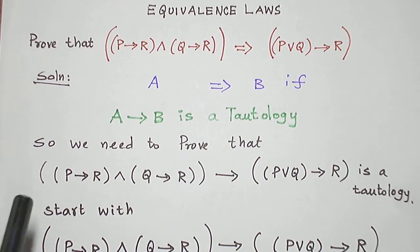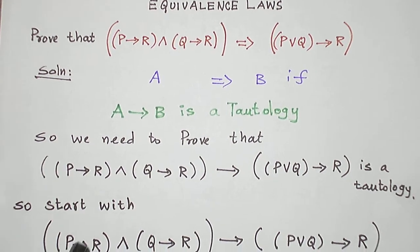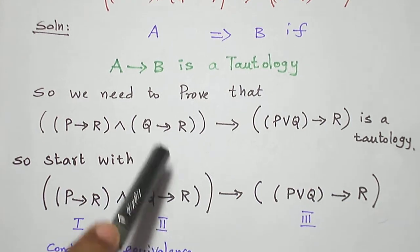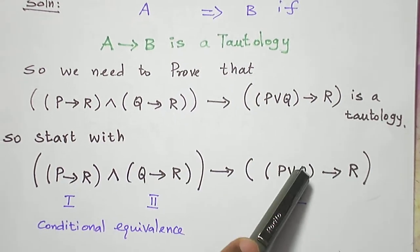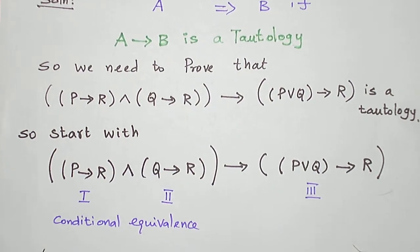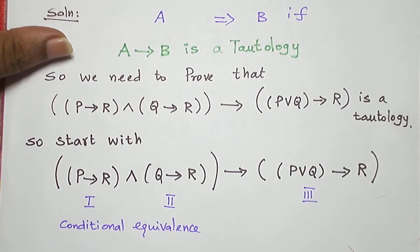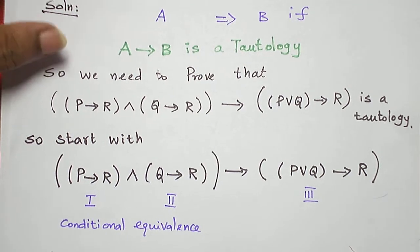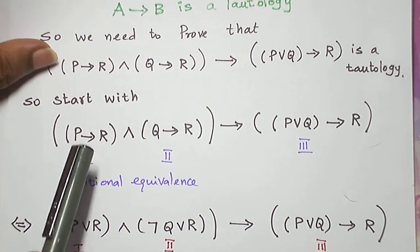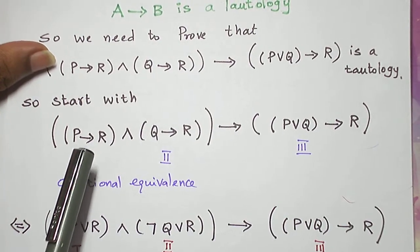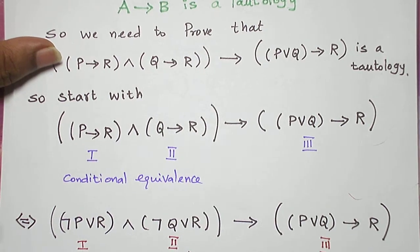So let me start with this statement formula: P conditional R and Q conditional R, conditional P or Q conditional R. Let us simplify it using equivalence laws. First let me take this as the first term, second term, and third term.